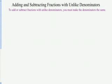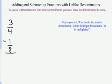Let's start with a fairly simple example. We'll take 3 fourths and subtract 1 eighth. The first thing I do is say to myself, can I make the smaller denominator 4 into the larger denominator 8 by multiplying? In this case, the answer is yes. I can multiply 4 times 2 to get 8. So I'm going to multiply it by 2 over 2.